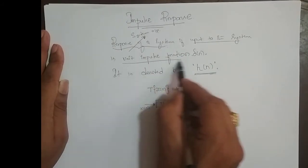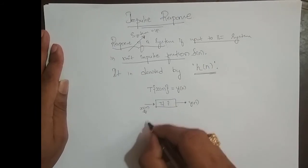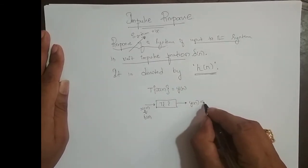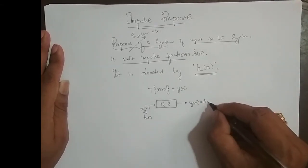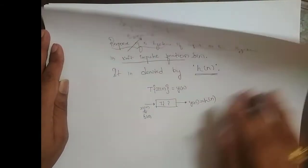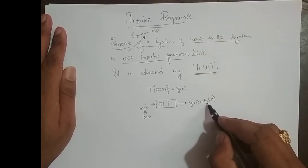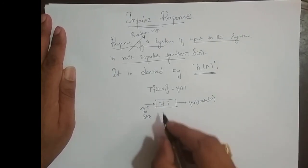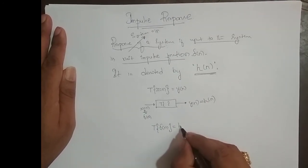Now, it is the response of the system when the input to the system is a unit impulse function. So instead of a general input, I feed delta of n — the unit impulse function — to the system. The output, which is the response of the system for input delta of n, is denoted as h of n. So whenever I feed delta of n to the system, the output we get is h of n, which is the impulse response of the system. I can write it as: transformation of delta of n is equal to h of n.